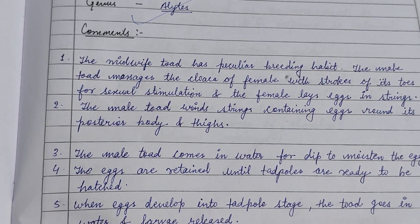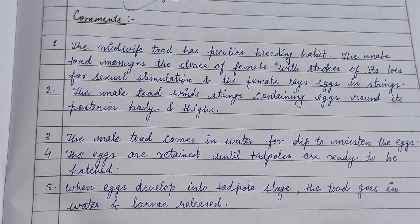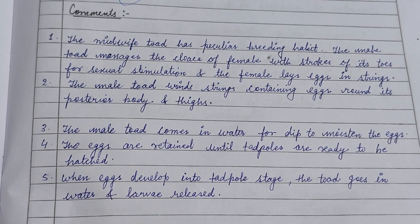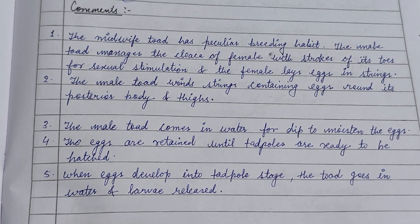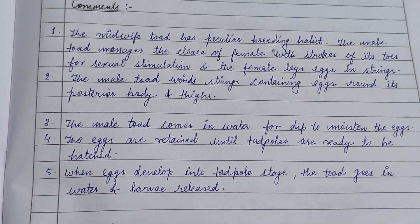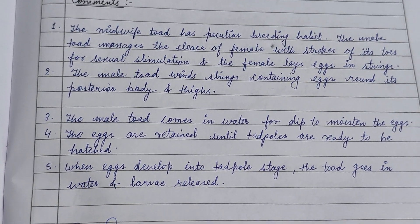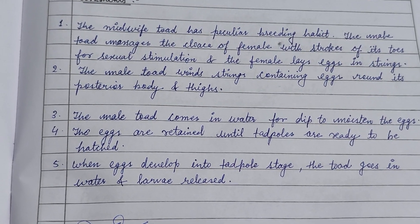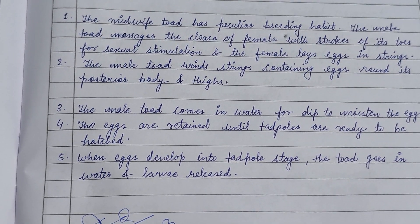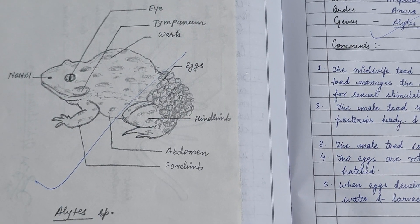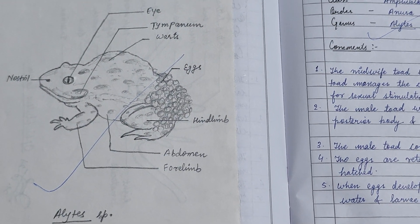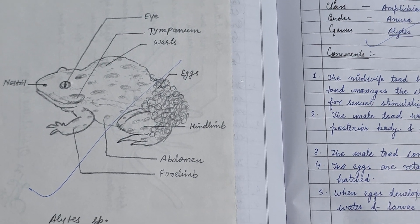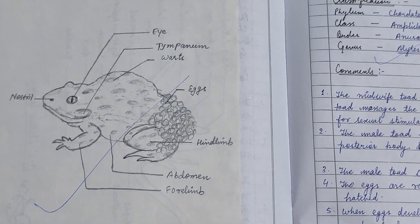Next is Alytes, also known as the midwife toad. In this, the male shows parental care and has a peculiar breeding habit. The male massages the female's cloacal aperture as stimulation for the sexual process, and the female lays eggs in strings. The male then winds these strings containing eggs around his posterior body and thighs. In the figure of Alytes, the midwife toad, a number of eggs can be seen on this posterior part of the body.